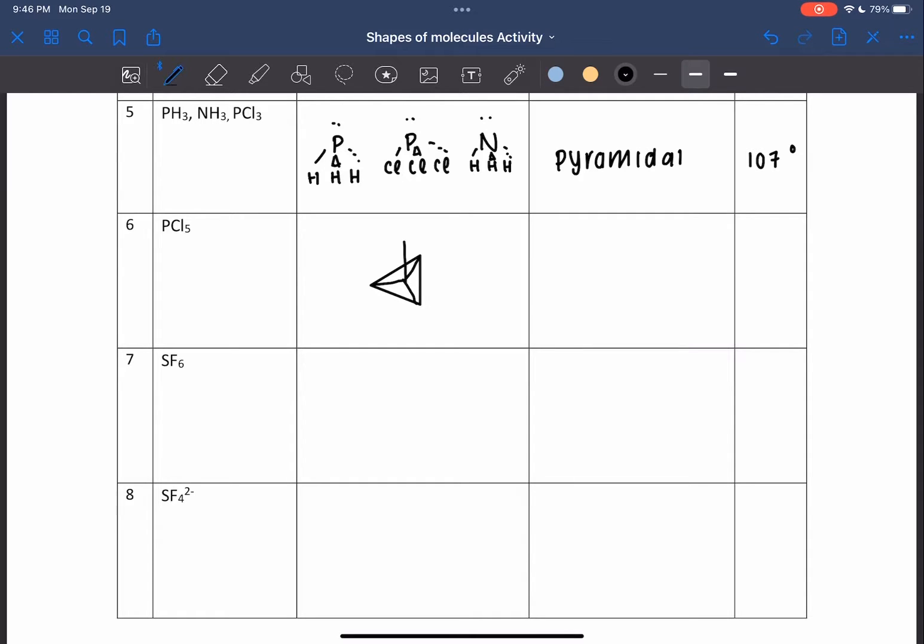For five bond pairs, an example is PCl5. It has two bond angles: 90 degrees and 120 degrees.